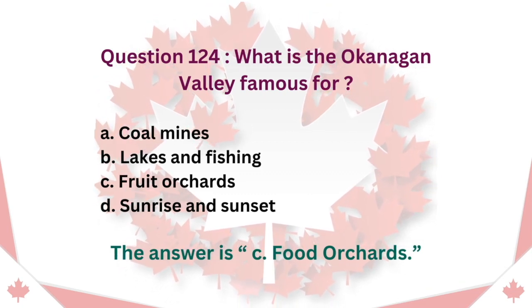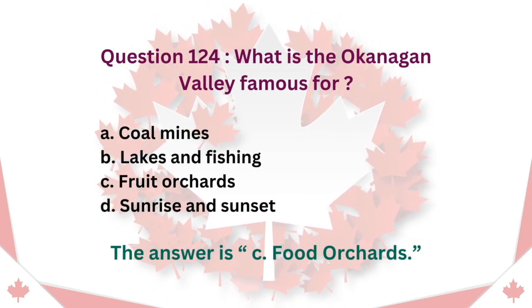Question 124: What is the Okanagan Valley famous for? A. Coal Mines. B. Lakes and Fishing. C. Fruit Orchards. D. Sunrise and Sunset. The answer is C. Fruit Orchards.